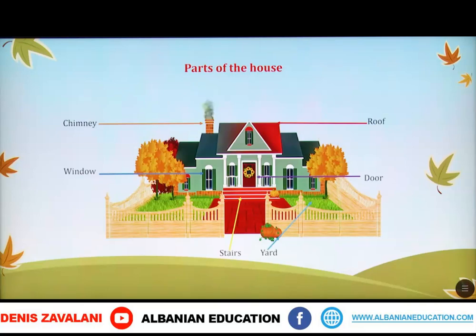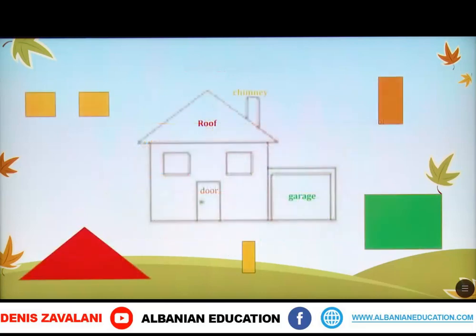Next, we are going to do an exercise. Here, as you see, we have a house and some parts of it. We are going to put them in the correct place. Si që po e shihni, këtu kemi një ushtrim, kemi një shtëpi dhe kemi pjesët e shtëpisë të ndara. Ne do t'i bashkojmë ato së bashku sipas formave të dhëna. Let's start.